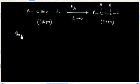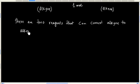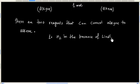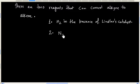There are 2 reagents that can convert an alkyne to an alkene. One reagent is hydrogen in the presence of Lindlar catalyst. Another reagent is sodium in liquid ammonia.